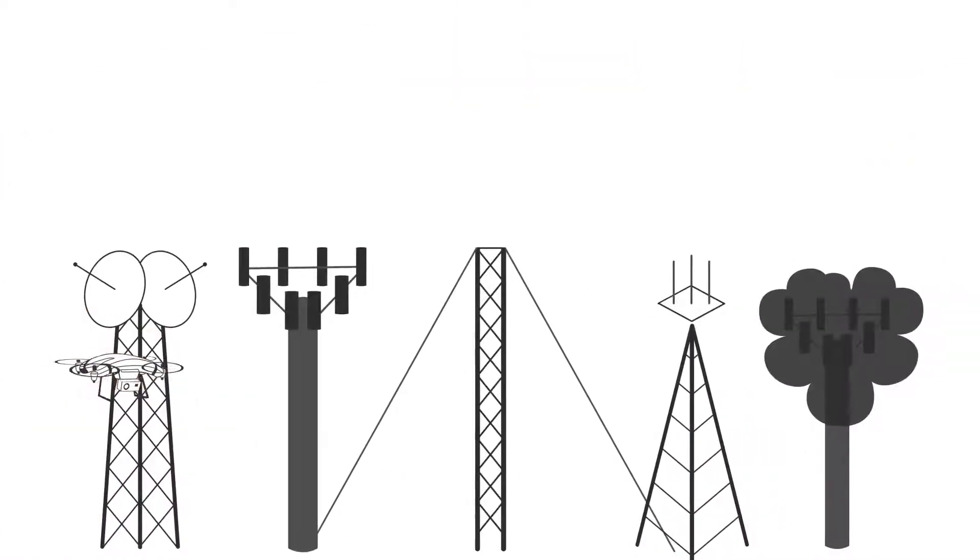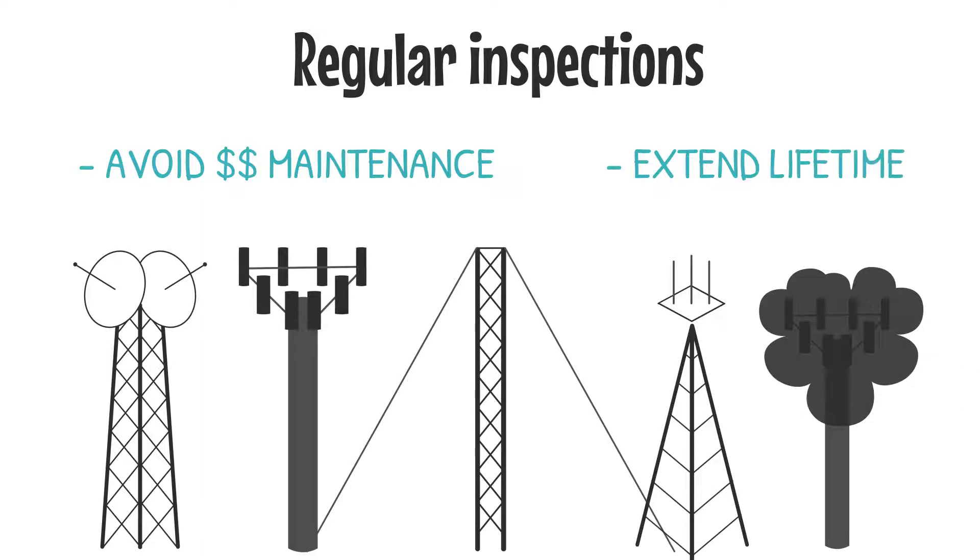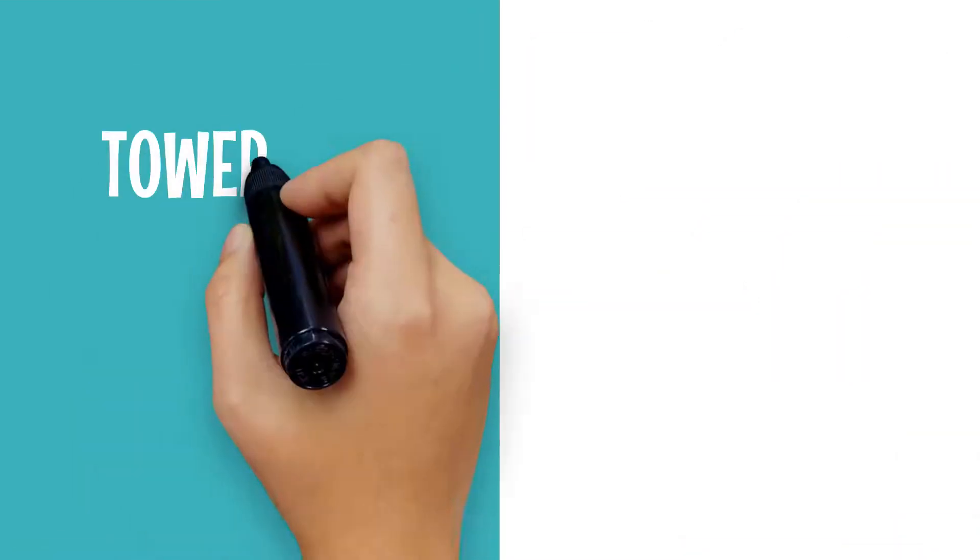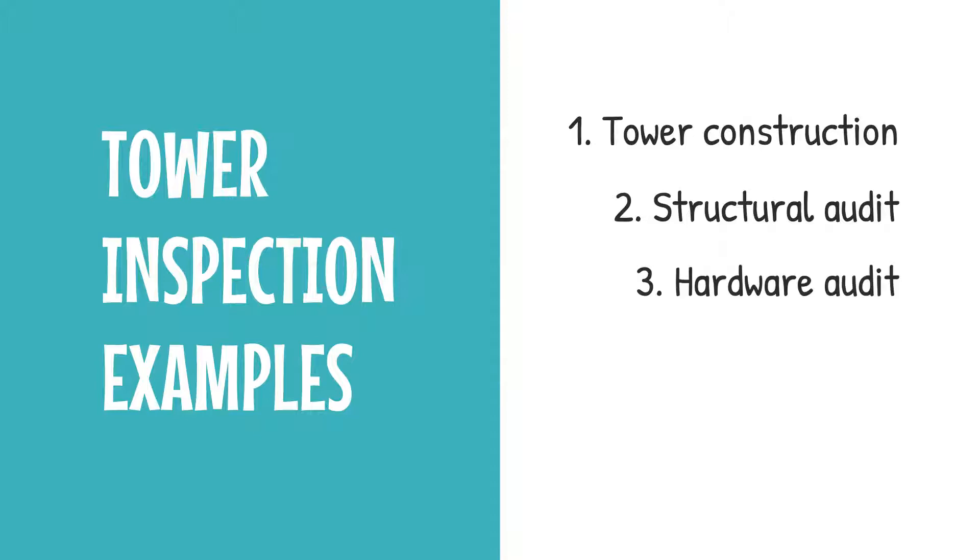Cell towers need to be inspected often and regularly to avoid heavy maintenance costs and extend their lifetime. Some examples of tower inspections are pre- or post-tower construction, periodic tower structural audit inspections, periodic cellular hardware inspections, asset location mapping or 3D modeling, and LIDAR for point cloud or geotagging.